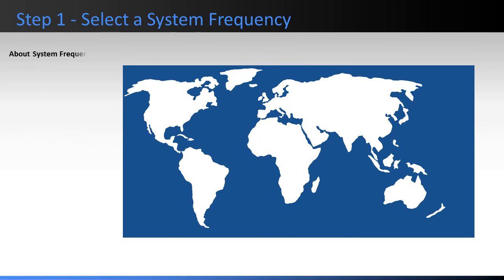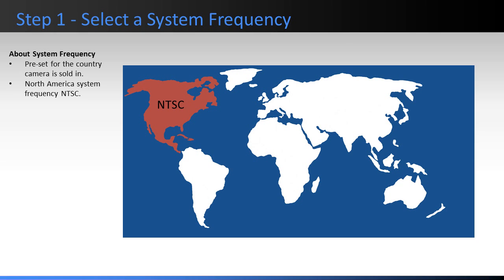Step 1: Select a System Frequency. The System Frequency comes preset to the system frequency in the country the camera was sold in. In North America, the system frequency is NTSC. You only need to change the system frequency setting when you are creating a motion picture for an area that has a broadcasting system different from that of your region.